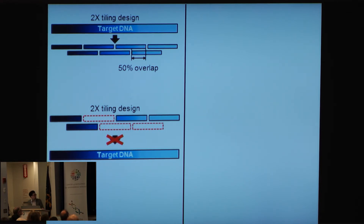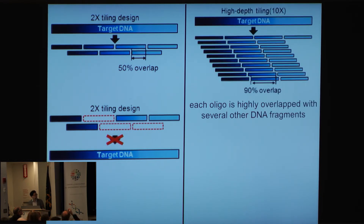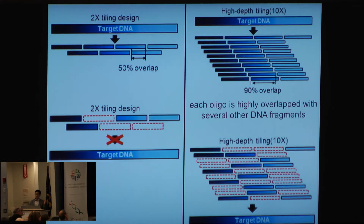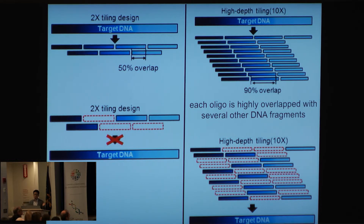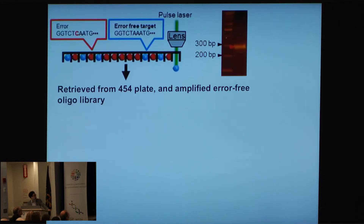So we decided to introduce a concept of a high-depth tiling strategy. In this case, we used a 10x-tiling strategy where each oligo is highly overlapped with several other DNA fragments. Since we can produce large numbers of error-free oligonucleotides at once, even if we collect only 70% of the desired oligonucleotides, we can still use them to assemble the target genes.